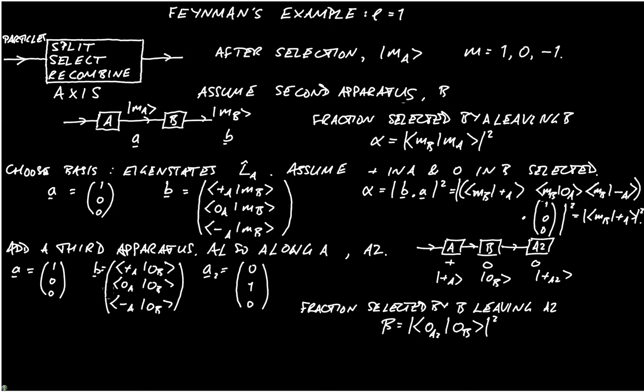So the total fraction, the total leaving A2, is going to be equal to the square modulus of zero A2, zero B, multiplied by zero B plus A. So we've combined two different bra kets, so the right hand one, the plus A, zero B, is the first selection, and then the left hand one, the zero B, zero A2, is the second selection.